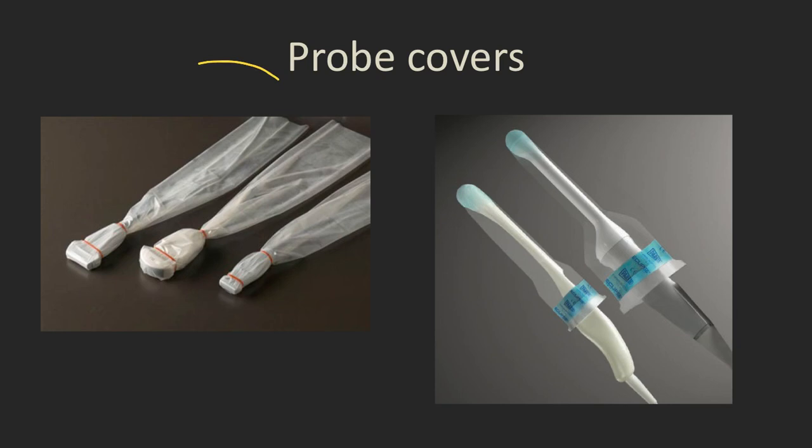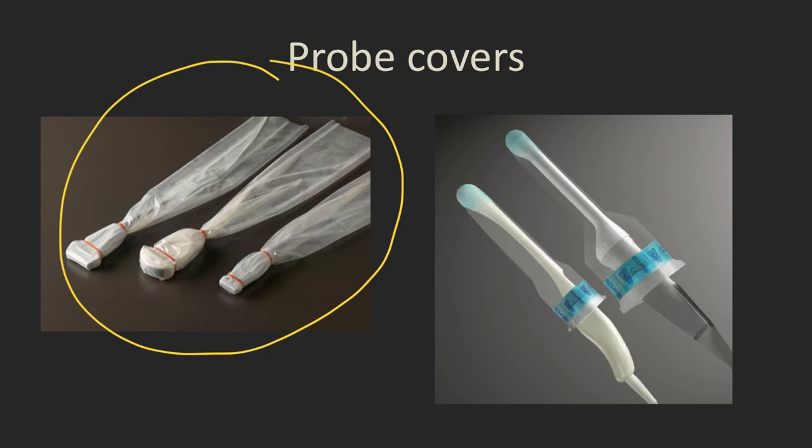And here's some examples of probe covers. These ones are sterile covers that are being used on surface probes, for example, if you're doing a procedure. And these are probe covers that are being used on endocavity probes, which are designed for endovaginal or endorectal ultrasound.